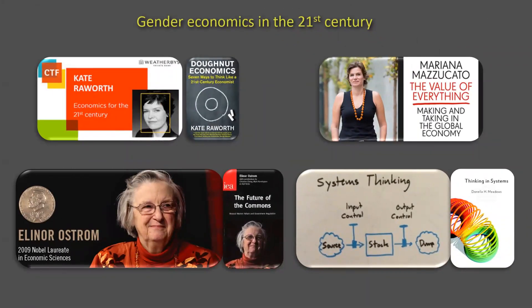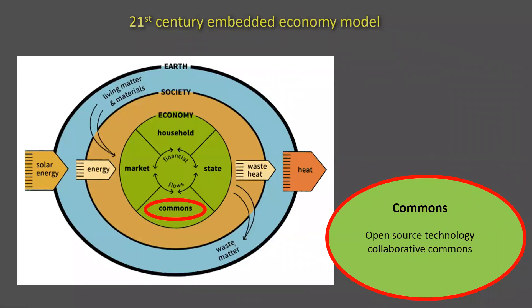Let's have a look at gender economics in the 21st century. The ones that are changing the scene are women — they're turning traditional economics on its head and coming up with these 21st century embedded economy models. This is where it's really radical from the old ways of doing economics. You can see it's embedded because it's embedded in the earth, this finite resource. From that you've got society and economy, those three fundamentally making up sustainable systems. You can see the inputs: solar energy coming in, heat out. Right at the core there, you can see the commons — this is the open source technology collaborative commons that sits within this new embedded economy model.